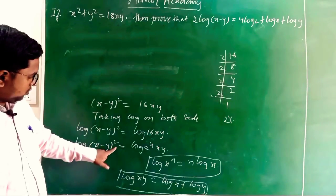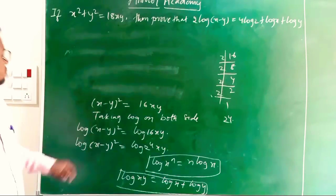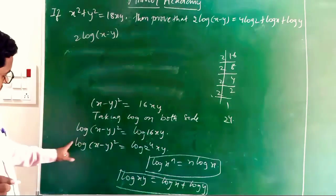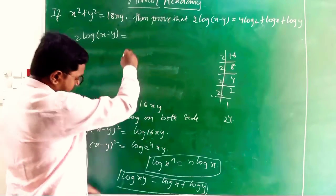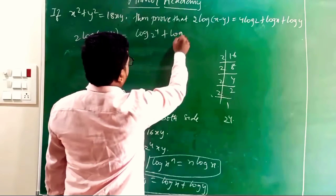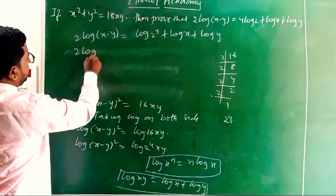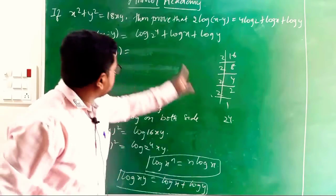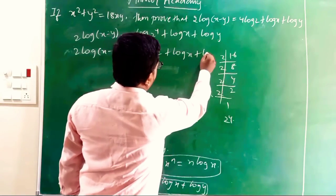Applying log xⁿ = n log x to log(x − y)²: 2 log(x − y) = log(2⁴ · xy). Then applying log 2⁴ = 4 log 2 and log xy = log x + log y, we get: 2 log(x − y) = 4 log 2 + log x + log y.